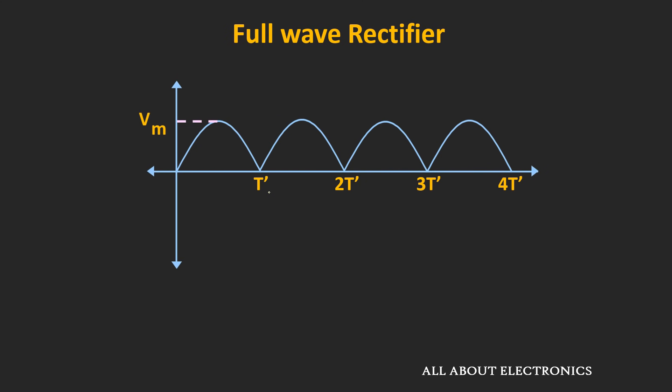So far we have seen how to design this full wave rectifier circuit using either the center-tap transformer or the bridge rectifier circuit. But if you observe this output waveform, it is not completely DC voltage, because there is still some periodic variation in this output waveform. This periodic AC variation in the DC output voltage is known as the ripple, and this ripple can be reduced by using a filter circuit at the output of the rectifier.